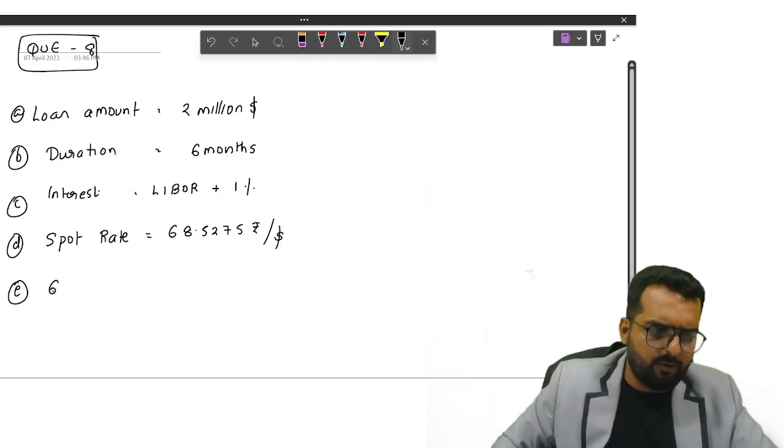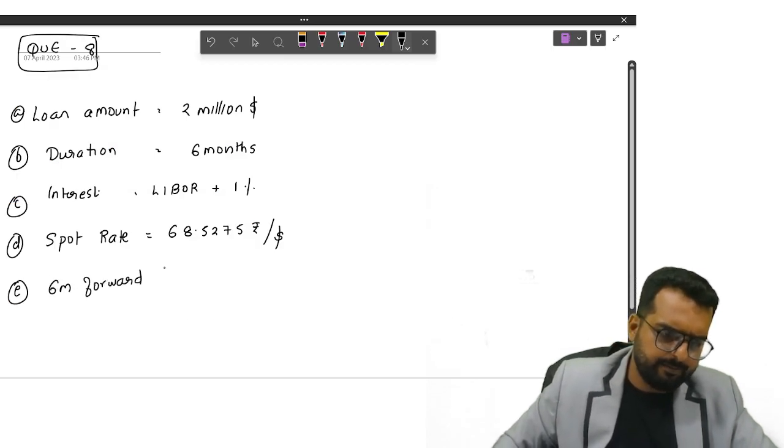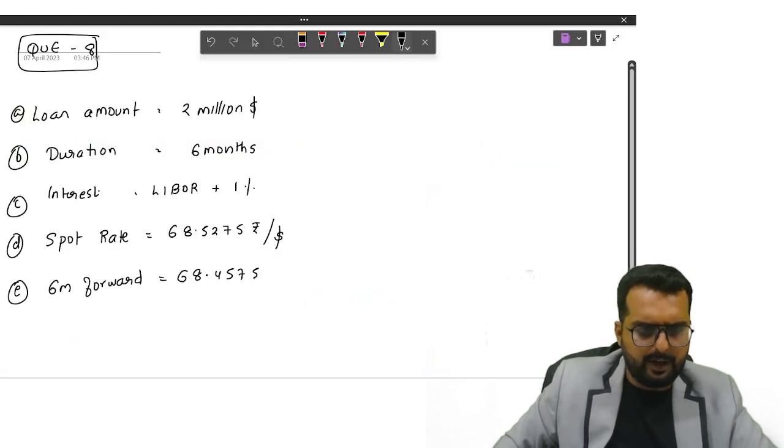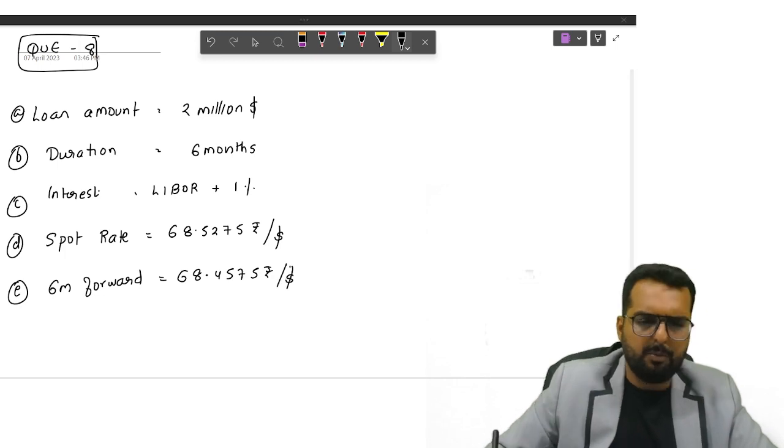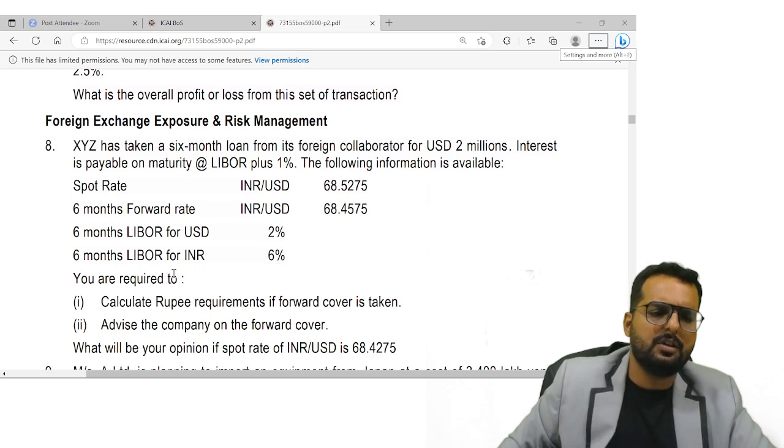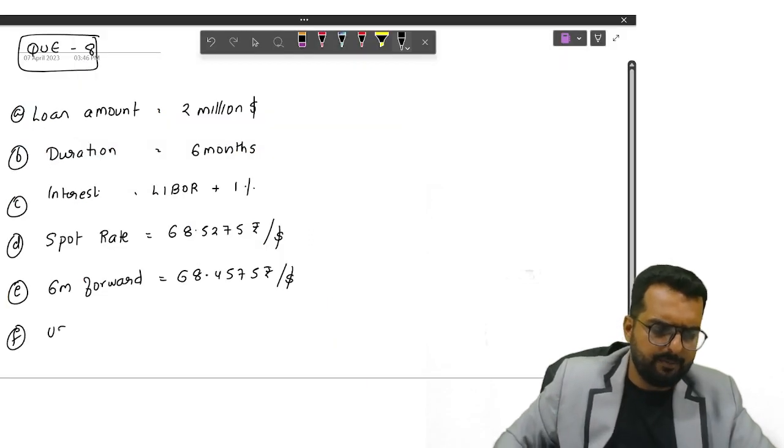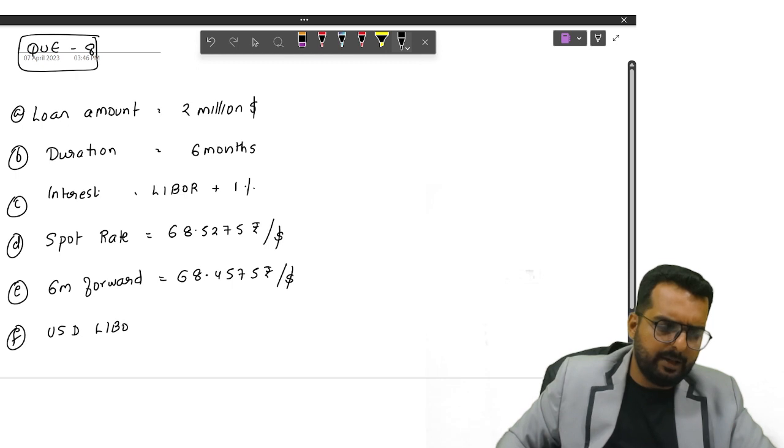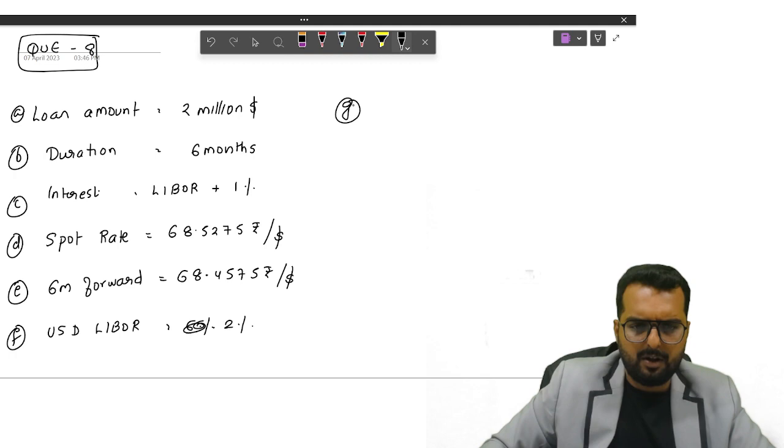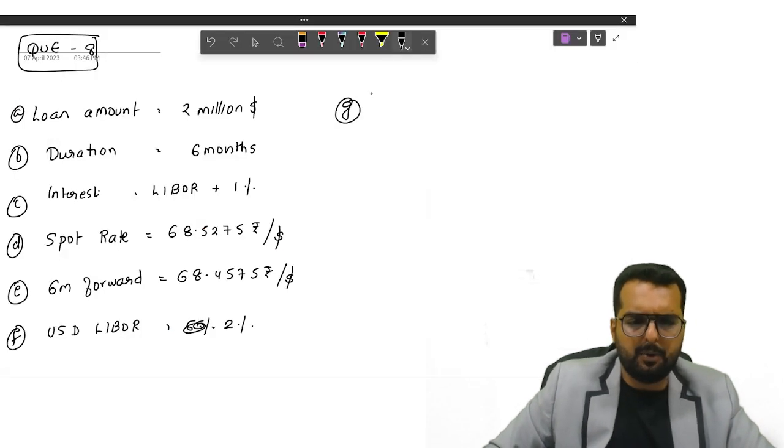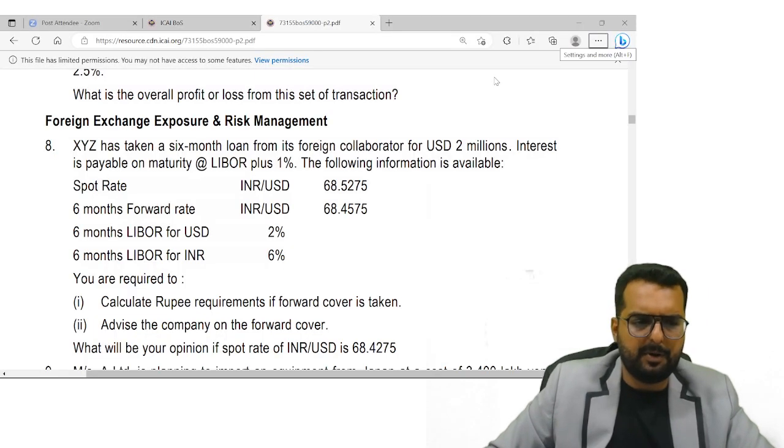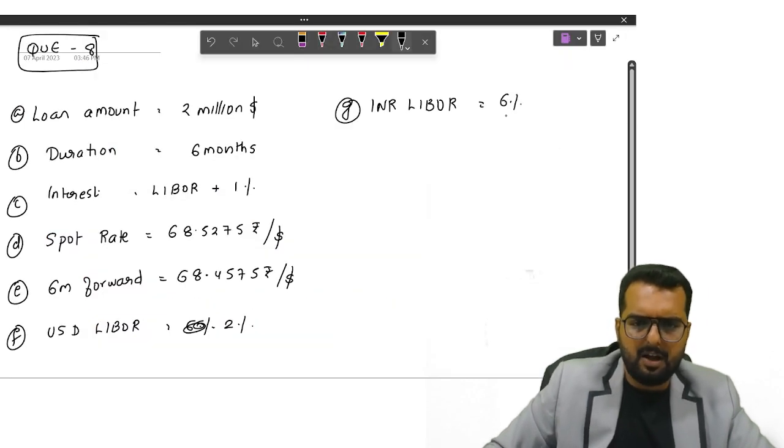That is 68.5275 rupees per dollar. Other one is six months forward rate, 68.4575 rupees per dollar. Six months LIBOR for USD is two percentage. So I'll write down USD LIBOR, two percentage. What else have they given? INR LIBOR, that is going to be six percentage.